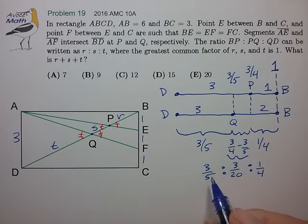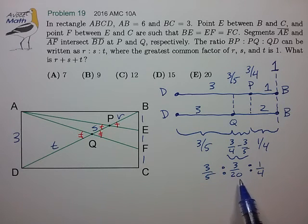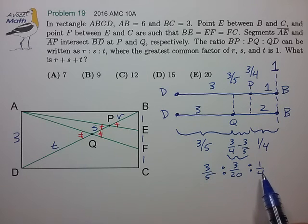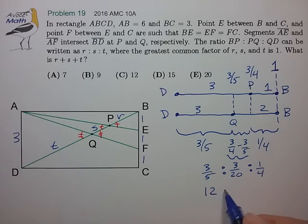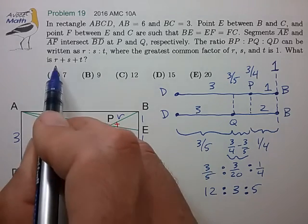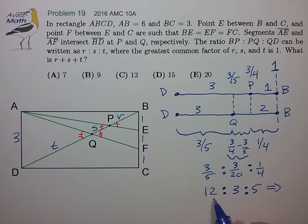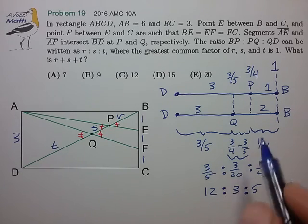So, the ratio we have now is 3 fifths is to 3 twentieths is to a quarter. Let's multiply by the least common multiple. So, it looks like we just have to multiply all of these by 20 to remove the fractions. That leaves us 12 is to 3 is to 5. And that's a reduced ratio now, and we're looking for the sum, R plus S plus T. So, just adding up these three numbers, 12 plus 3 plus 5 is 20. And that's our answer. 20 is choice E.